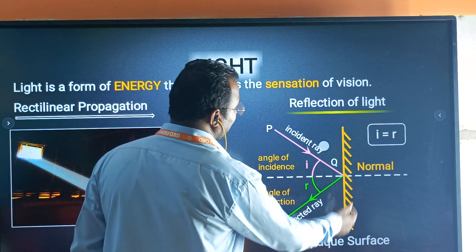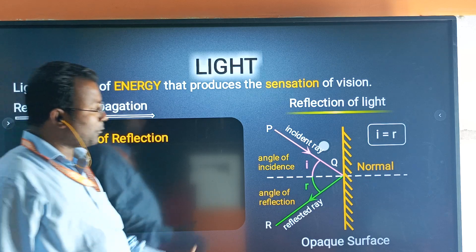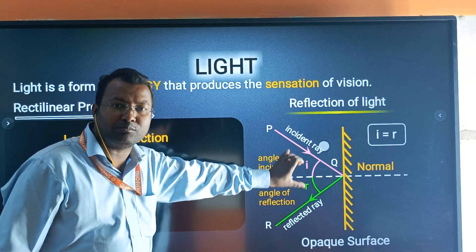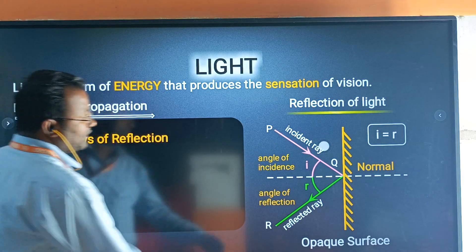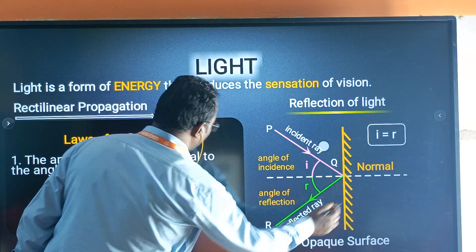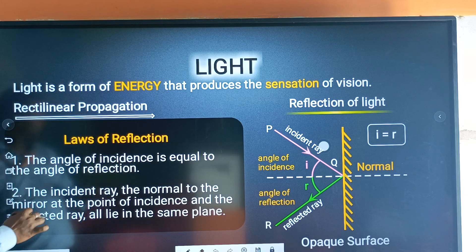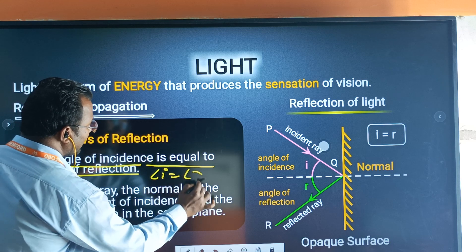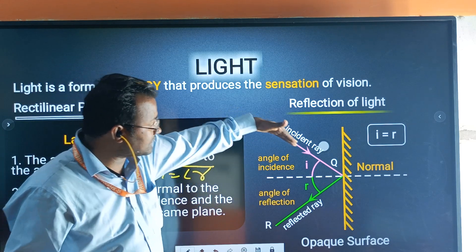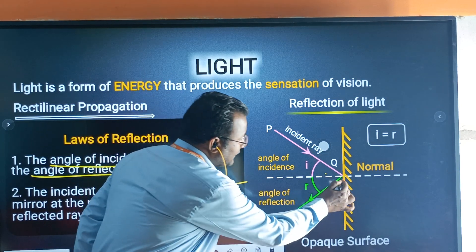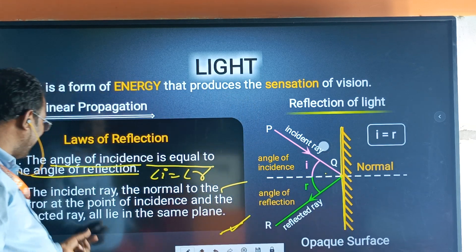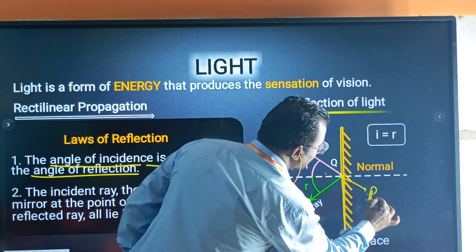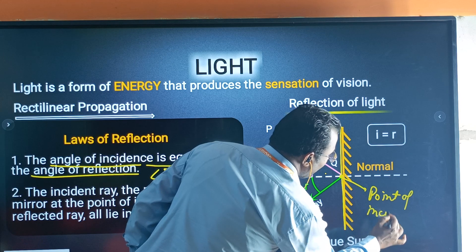Let's take a look at the laws of reflection. First law: angle I is equal to angle R. Always remember the angle of incidence and the angle of reflection both will be equal. And the second law: the incident ray, normal, and reflected ray all will lie on a same plane. And this point where they meet is called as point of incidence.